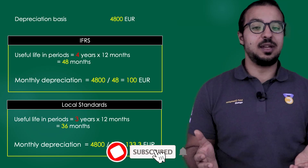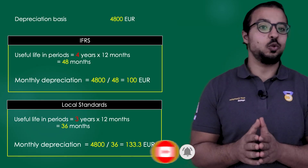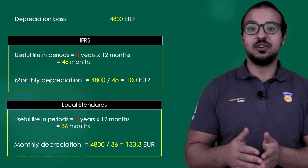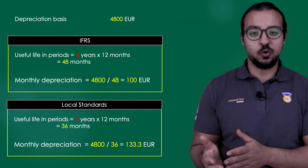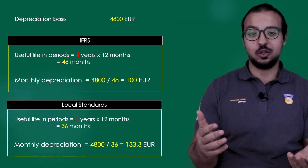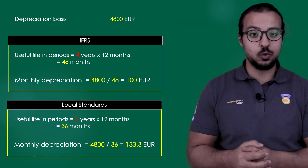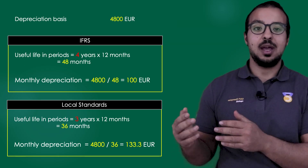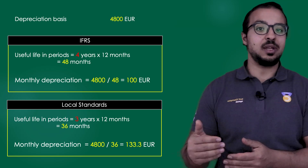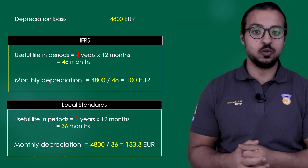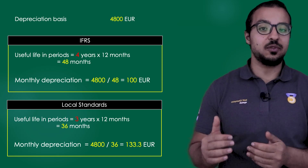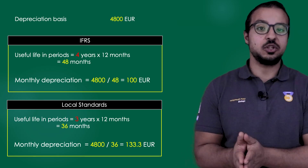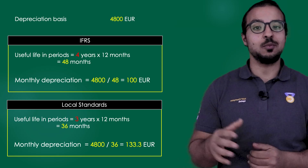If we have two different financial standards, in every period we post two different financial entries — one for each standard. For IFRS: debit depreciation expense, credit accumulated depreciation for 100 euros. For local standards: debit depreciation expense, credit accumulated depreciation for a different value — say 150 euros. This can be achieved in SAP by using different depreciation areas; for every accounting standard we use, we create at least one depreciation area. We will see more details about this in the system demo video.